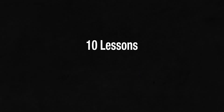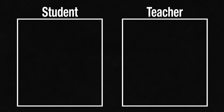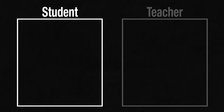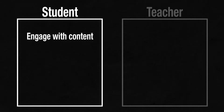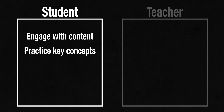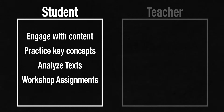Our High School Speech 2 course is divided into ten lessons that cover approximately three hours of class time. You will receive both a student edition of the curriculum and a teacher edition. The student edition is the text students will work through as they engage with content, practice key concepts, analyze text, and workshop their assignments.